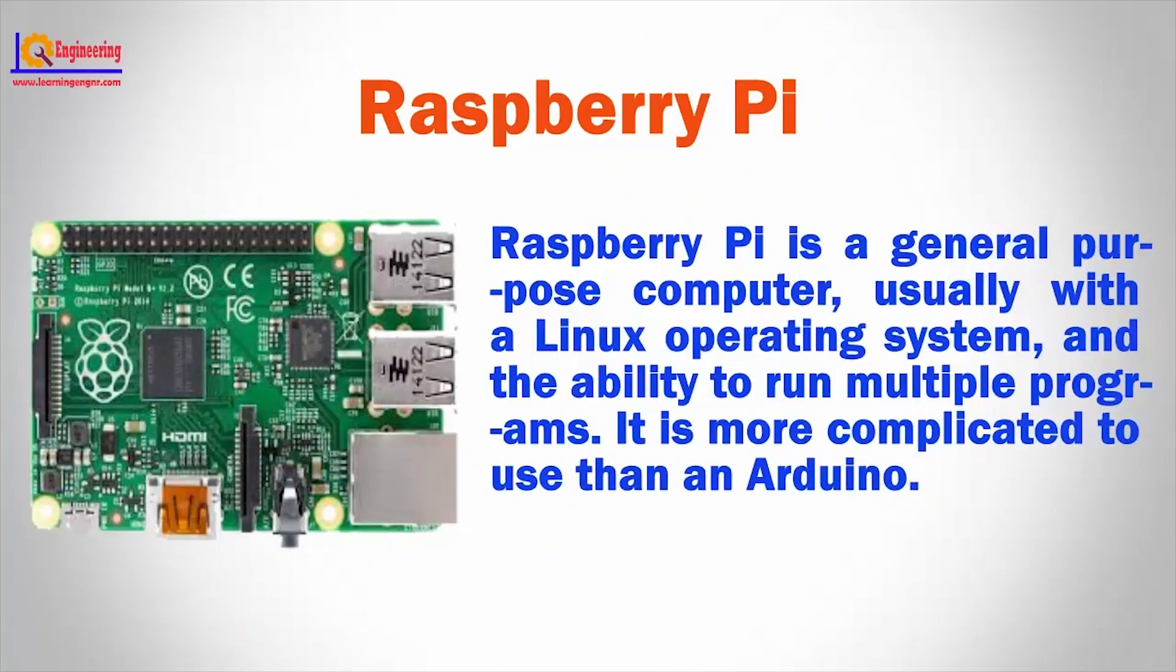On the other hand, a Raspberry Pi is a general purpose computer, usually with a Linux operating system, and the ability to run multiple programs. It is more complicated to use than an Arduino.